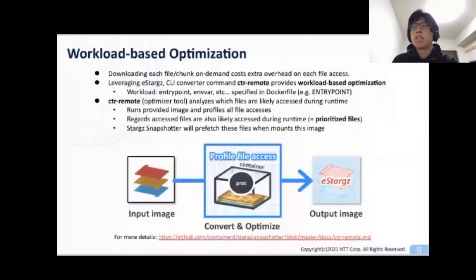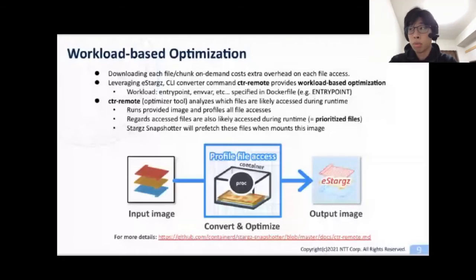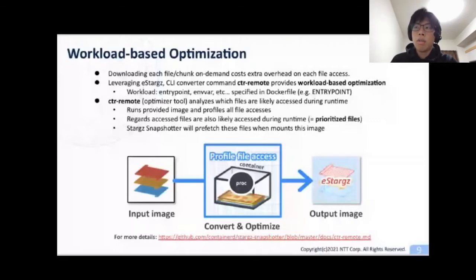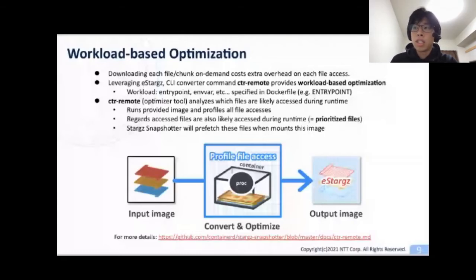Downloading each file or chunk on demand costs extra overhead on each file access. Leveraging the prioritized files feature of eStargz, the converter tool developed in the Stargz Snapshot project supports workload-based optimization. In general, container images are built with purpose and the workload or runtime configuration is specified in the Dockerfile using instructions including entrypoint, env, user, etc. The CKR Remote Image Converter leverages this information recorded in images and analyzes which files are likely accessed during runtime. This converter runs the provided image in a container and profiles all file accesses. All accessed files are regarded as likely accessed during runtime and are recorded as prioritized files. As a result, the Stargz Snapshot will prefetch these files when mounting the image.